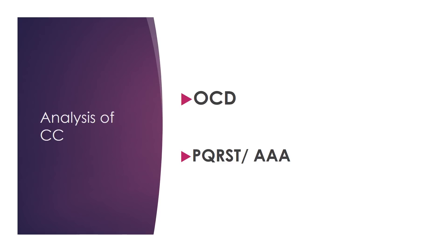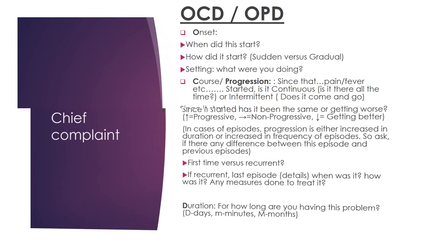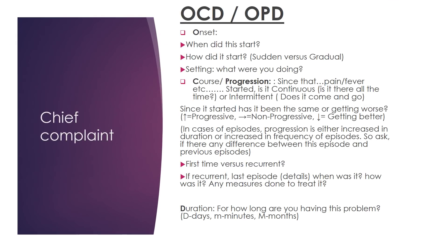Then you analyze the chief complaint using mnemonics. I use OCD and PQRST AAA, which we will elaborate on as tools to make your life easier. Start by asking about the onset, the course or progression, and the duration of the complaint.